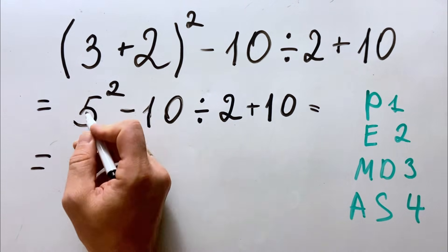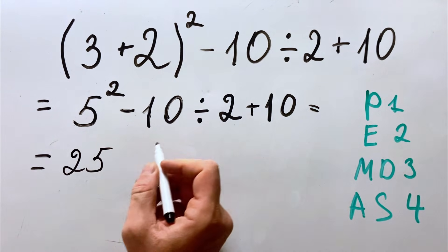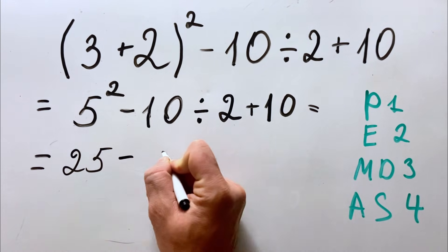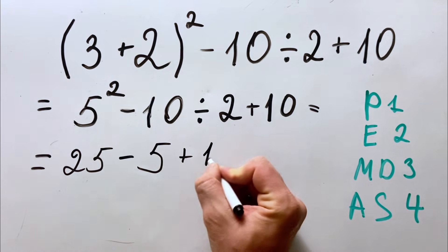So here we have exponents: 5 squared is 25. Then 10 divided by 2 is 5. So we have minus 5 and then plus 10.